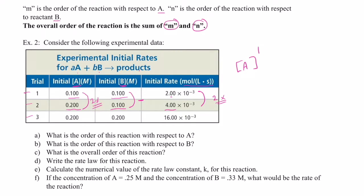Now let's look at the third experiment. We leave A at 0.200 molar just like in the second experiment, but this time we double the concentration of B to 0.200 molar. When that happens, the rate goes from 4 times 10 to the negative 3rd to 16 — it quadruples. So when I double the concentration of one reactant while leaving the other constant and the rate quadruples, we call that a second order reactant. So B is raised to the second power.